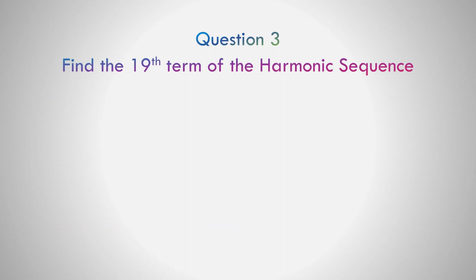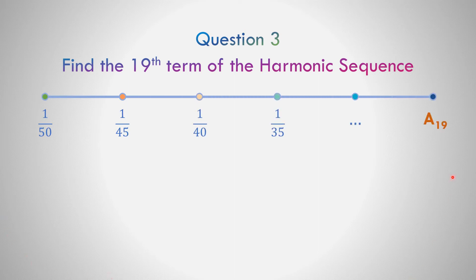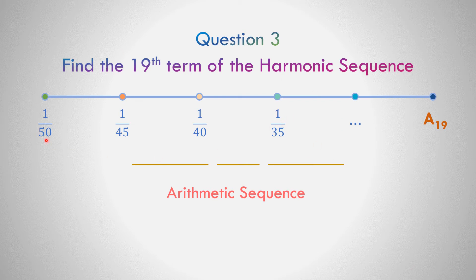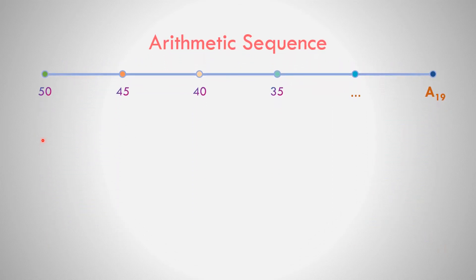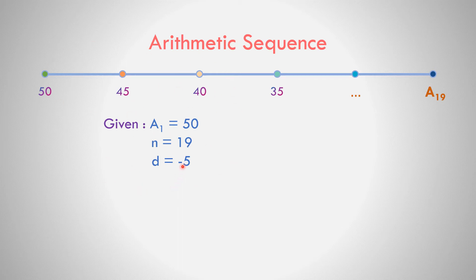Question number 3: Find the 19th term of the harmonic sequence 1/50, 1/45, 1/40, 1/35. The reciprocals give the arithmetic sequence: 50, 45, 40, 35. The first term is 50, the number of terms is 19, and the common difference is 45 minus 50, which equals negative 5.